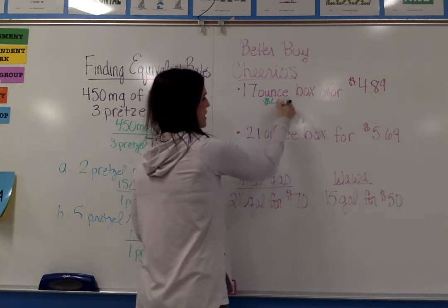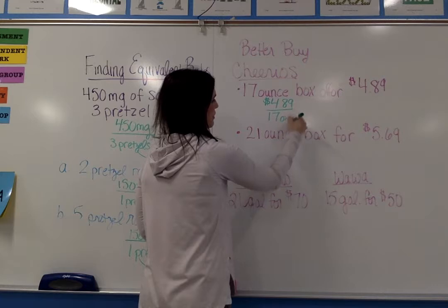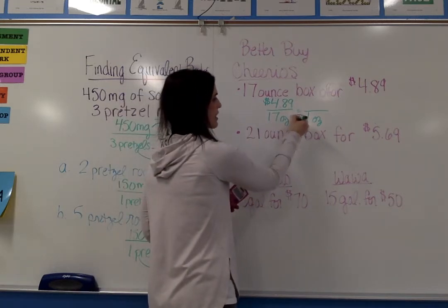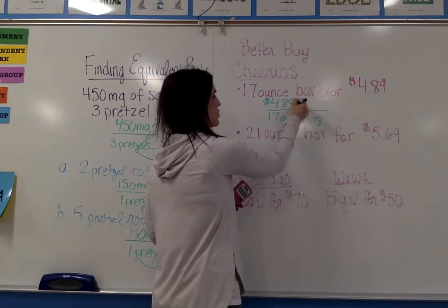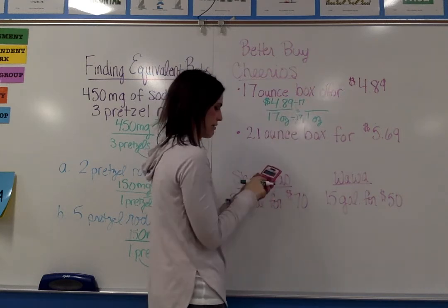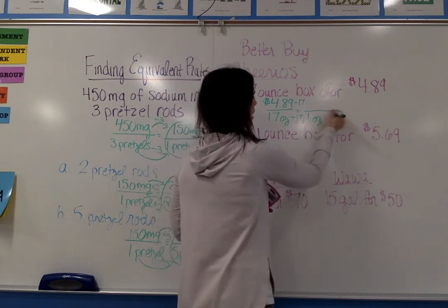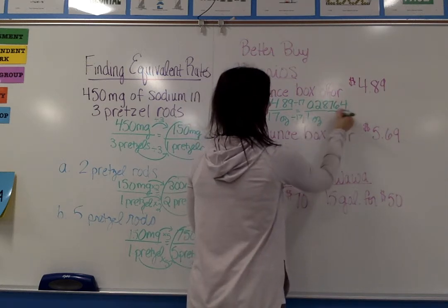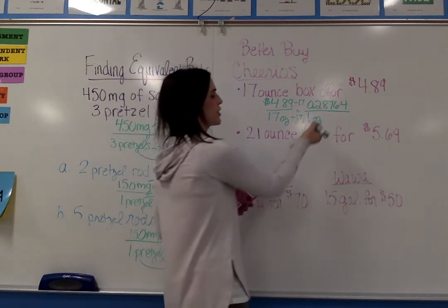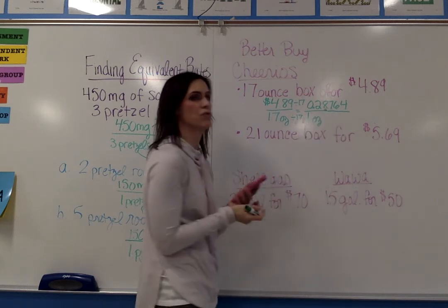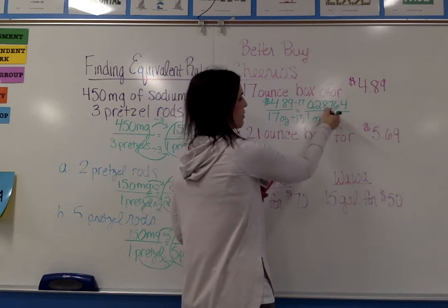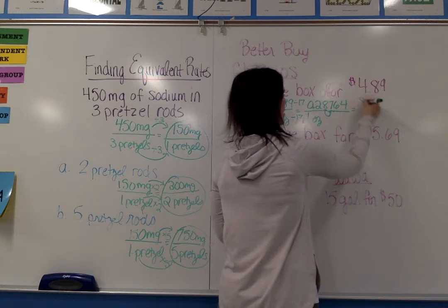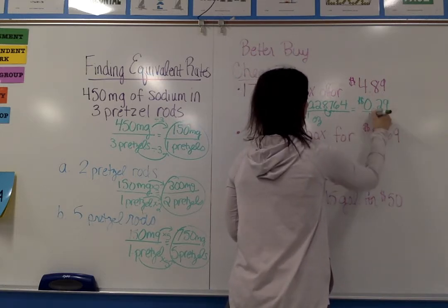If I'm paying $4.89 for 17 ounces, I want to find out how much I'm paying for one ounce — you'll need your calculator for this. I divide 17 by 17 to get to one, so I also divide the numerator by 17: 4.89 divided by 17. The decimal doesn't terminate, but since we're working with money, we round to the nearest hundredths. Looking at the thousandths place, I see a seven, which is higher than five, so I round the eight up to a nine. That gives approximately $0.29 for one ounce.